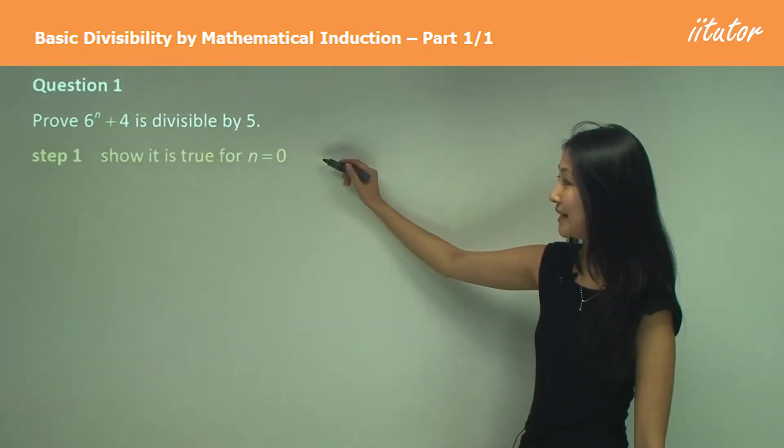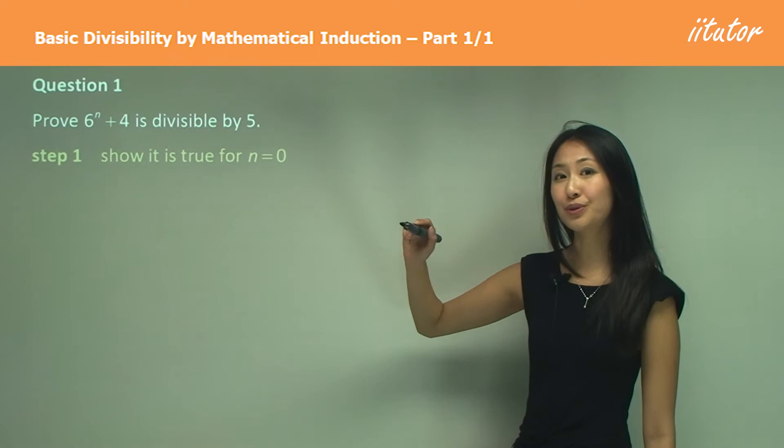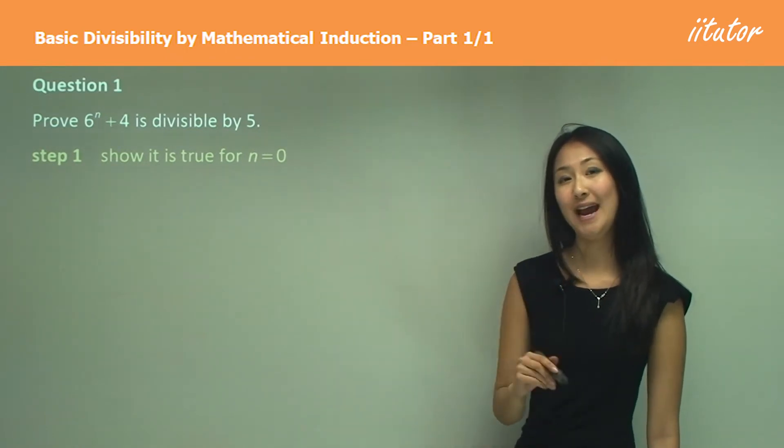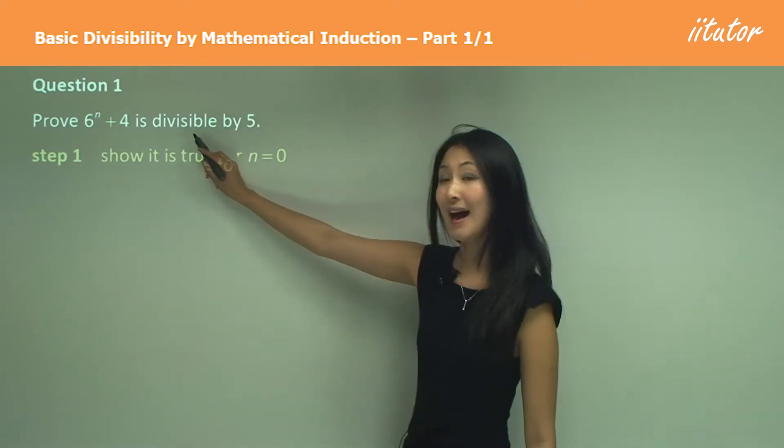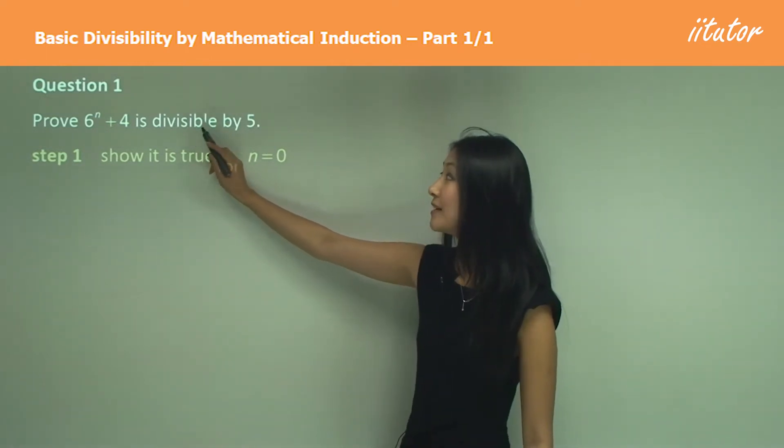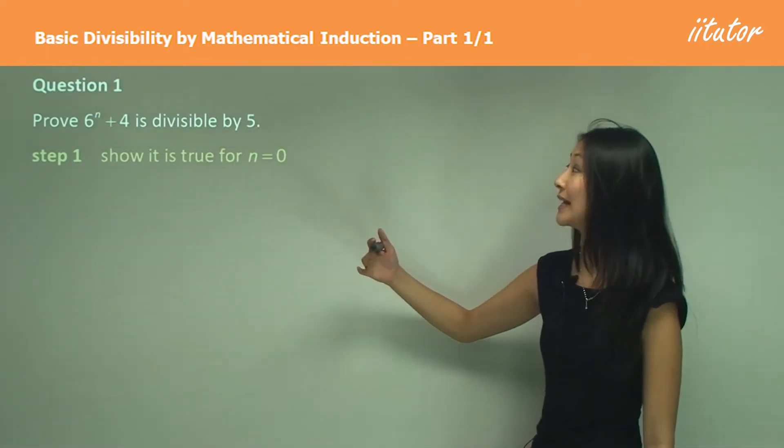So the first step is to show it's true for the initial value of n, and that's going to be the lowest integer that satisfies this up here. So we start off by substituting in zero.